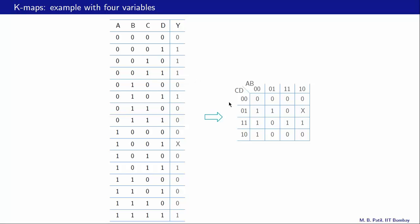Let us now look at the mapping of y from this format to this format for a few entries. For example, consider this one — a and b are zero zero, c and d are zero one, so that is this column and this row, and that is where that one goes. For another entry, a b equals one zero and c d equals zero one, so that column and that row is why we have that x over there. You can check the other entries as well.